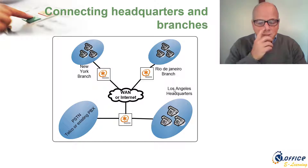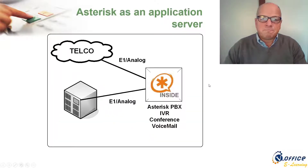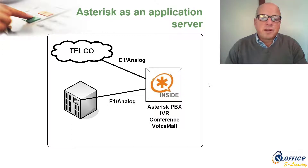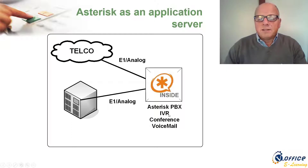If you don't have other PBX systems, you can simply use Asterisk on any of these branches and connect all of them. Asterisk as an application server is also an important use case — you can connect to a telco using E1, analog, T1, or even SIP to an internet telephony service provider. You can then run IVRs, conferences, voicemail, and run Asterisk PBX on the cloud.